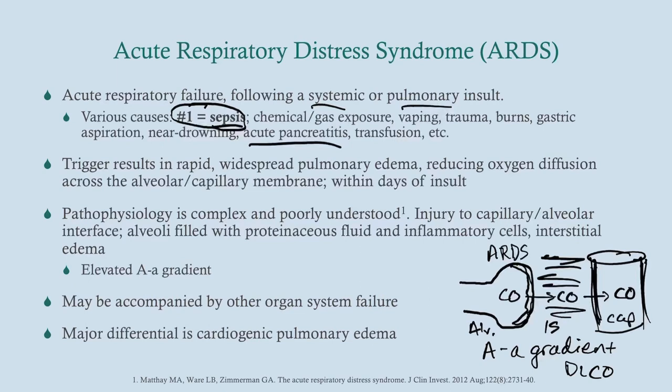The AA gradient can be measured via pulmonary function tests or, more commonly, arterial blood gases. The DLCO can be measured on its own. Either way, what we're looking at here is impaired gas exchange — an elevated AA gradient, which you can also see as a low DLCO.